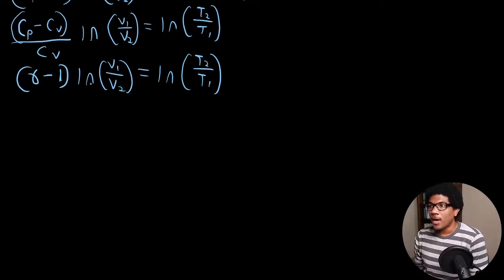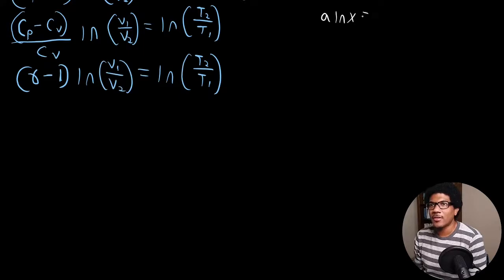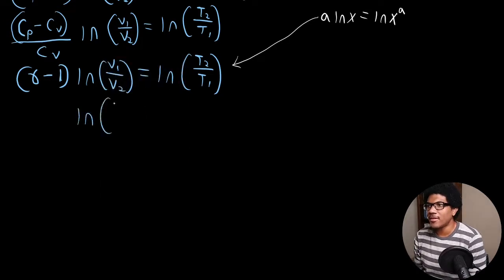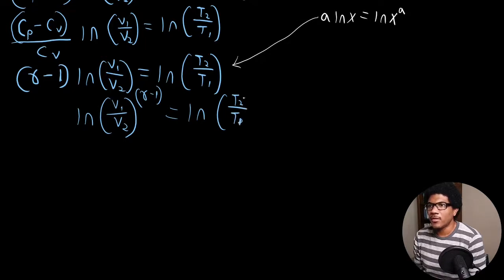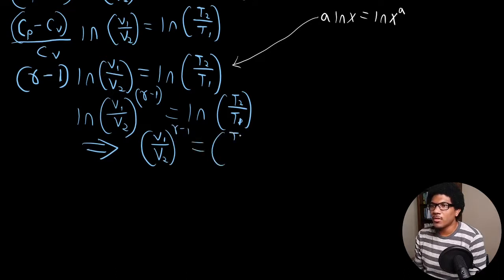Using another property of natural logs — that a·ln(X) equals ln(X^a) — we rewrite this as ln[(V1/V2)^(γ−1)] equals ln(T2/T1). Since the natural logs of both sides are equal, the arguments inside must be equal, so (V1/V2)^(γ−1) equals T2/T1.